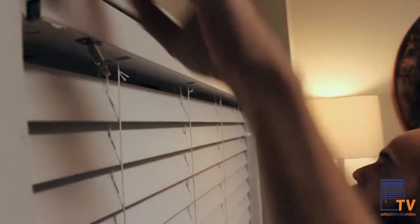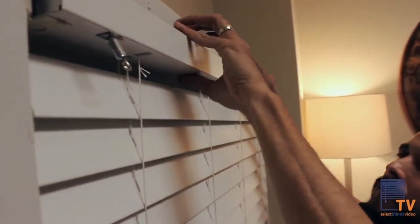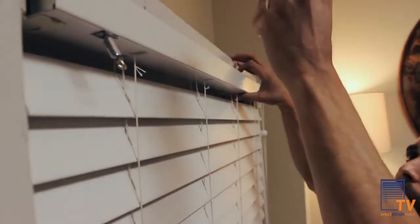First you want to get these hinges, bring the hinges up so you can bring your head rail out slightly. That will allow you to attach the balance clip.